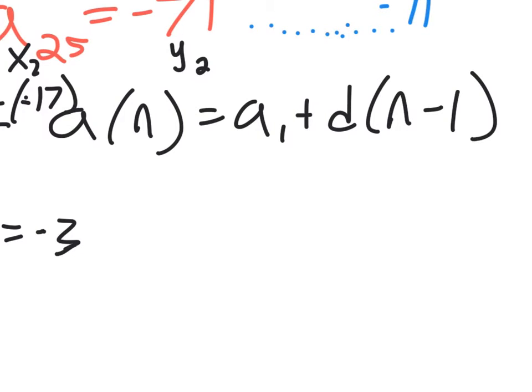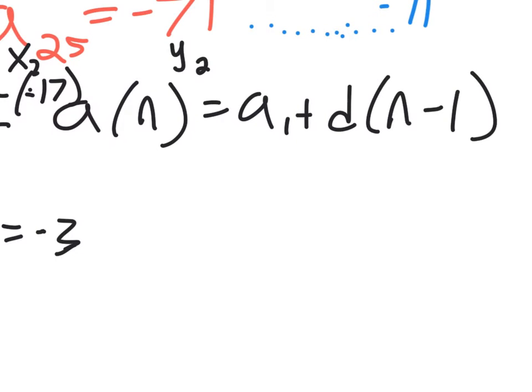In this formula, we have d, it's negative 3. We don't have a sub 1, though. So we've got to go find it.